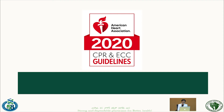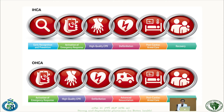What does the 2020 update say? The first change was adding a sixth component to the chain of survival. For in-hospital settings, this means early recognition and prevention of sudden cardiac arrest. For out-of-hospital settings, it means recognizing arrest and activating the emergency response system. Then high-quality CPR, defibrillation, and post-cardiac arrest care follow, with a new recovery component added in 2020.